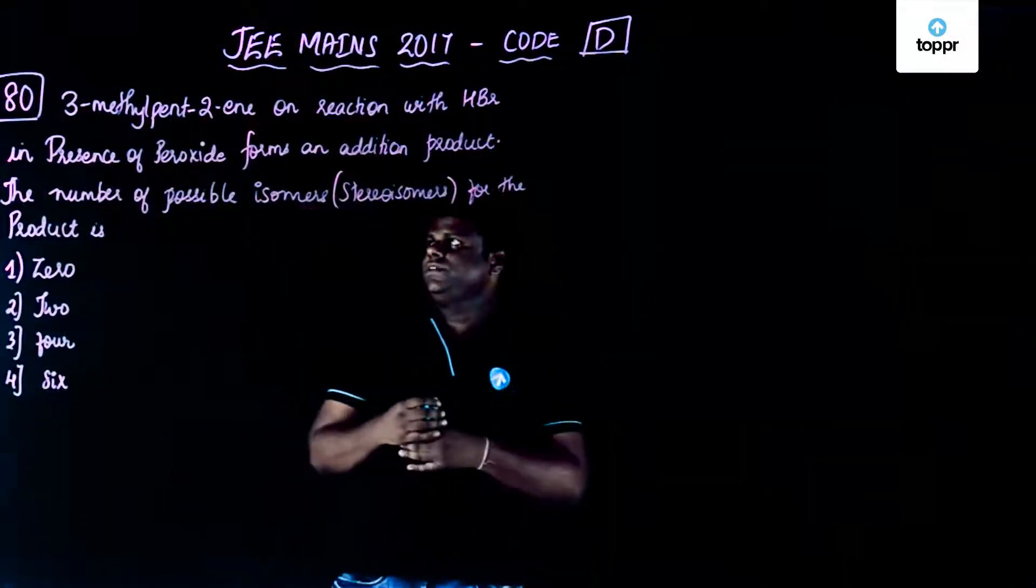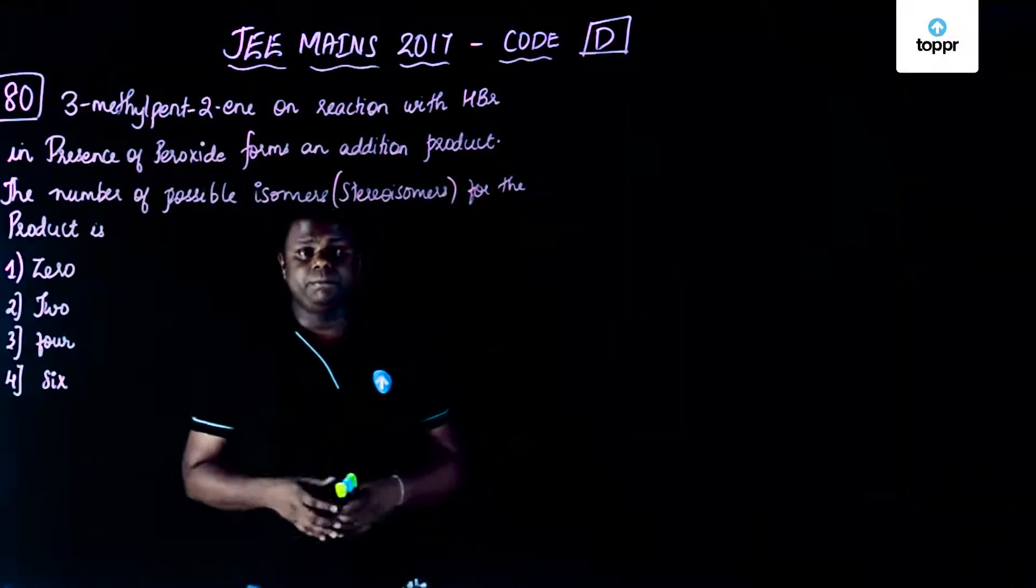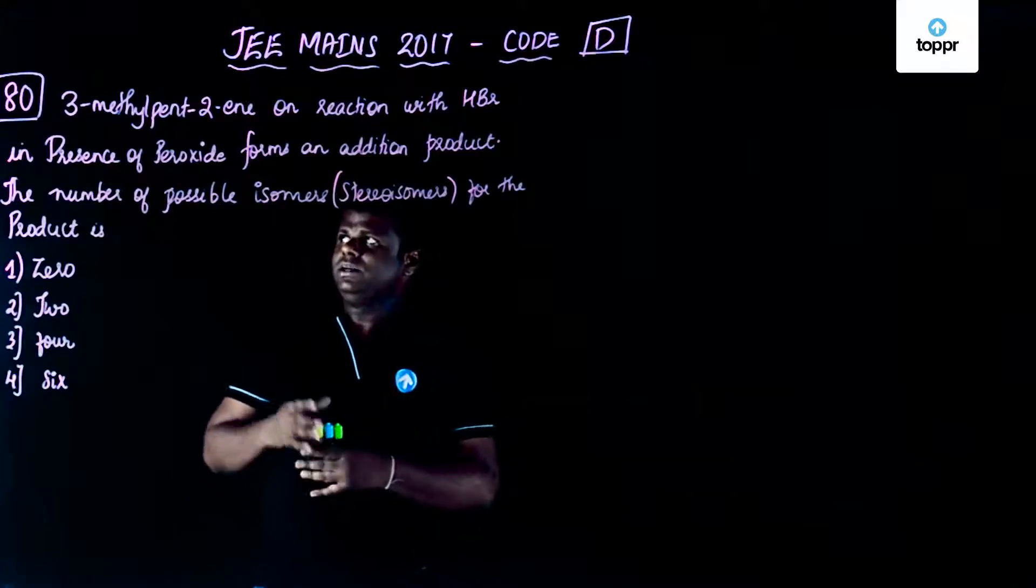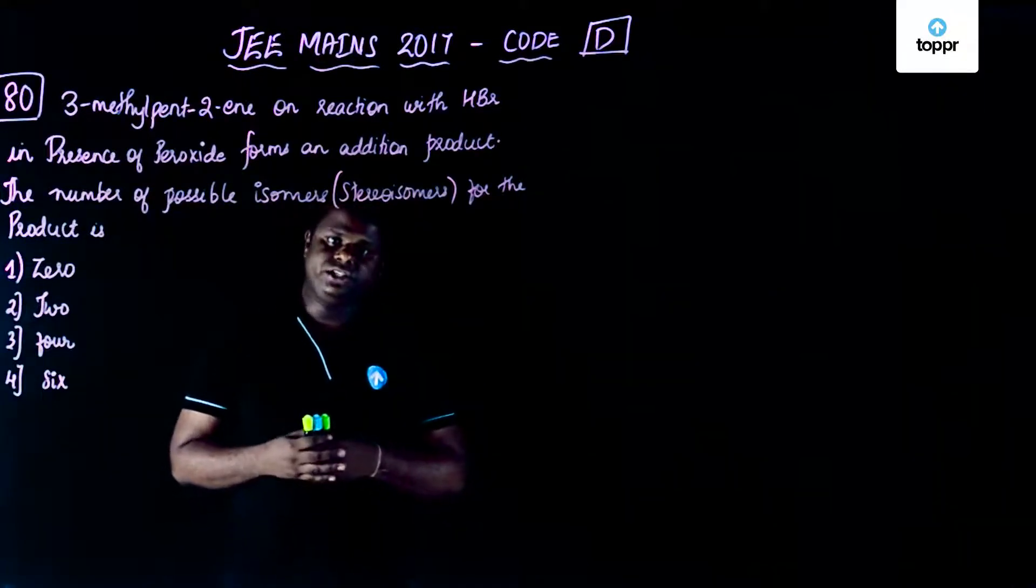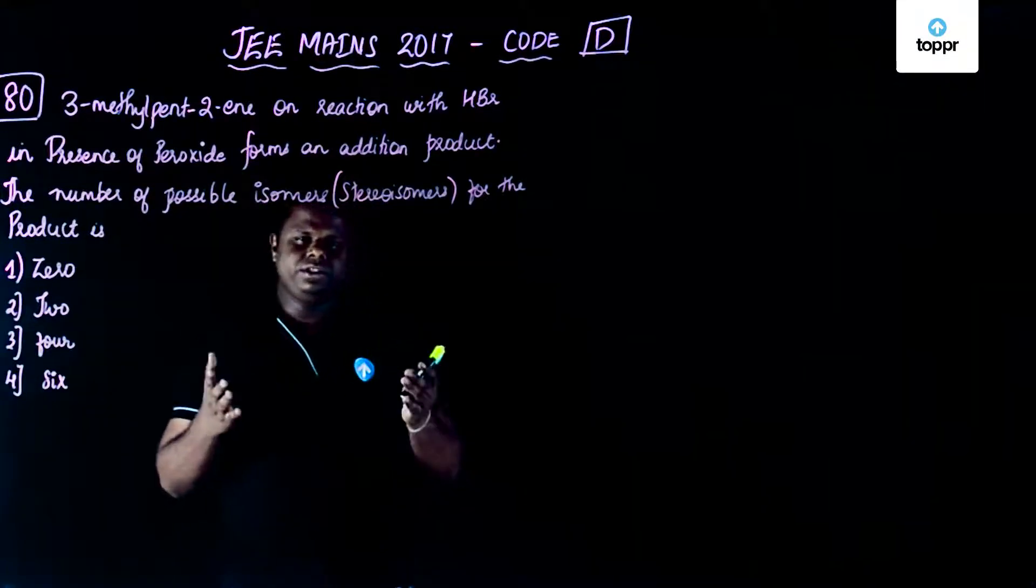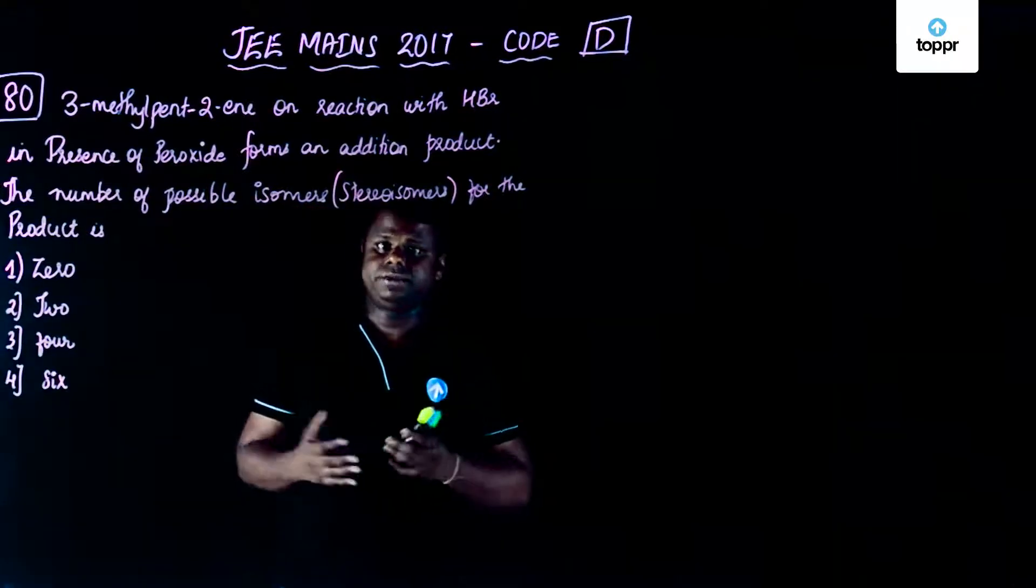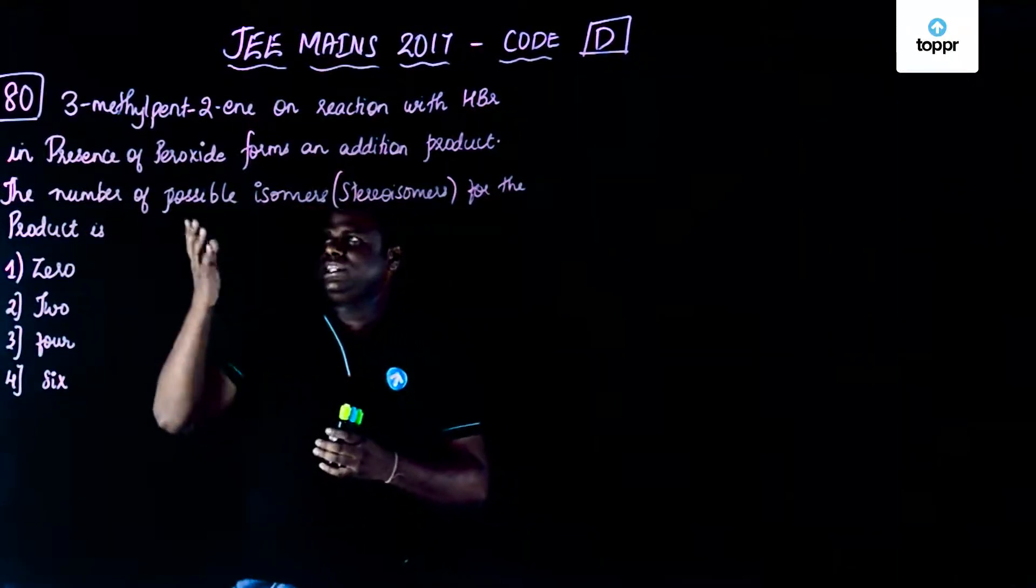Okay, now let's begin with our next question which is question number 80. Again the same paper code, code D. So now this question is related to stereoisomerism, that means indirectly you could say chiral compounds or something like that. So let's see what exactly it says.